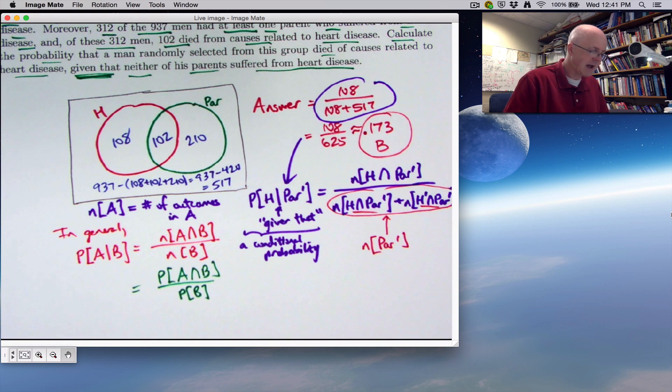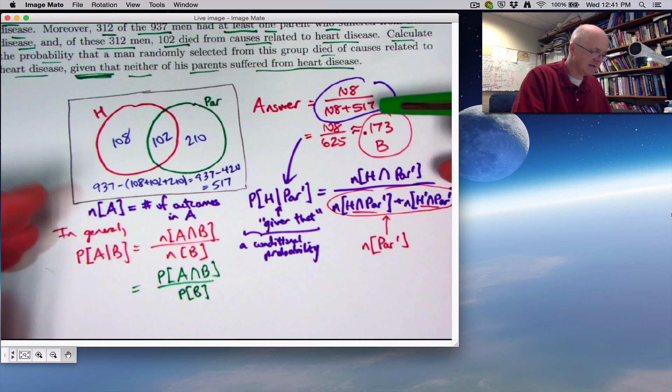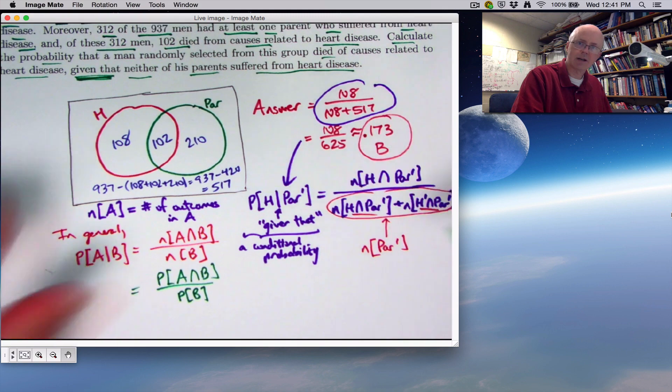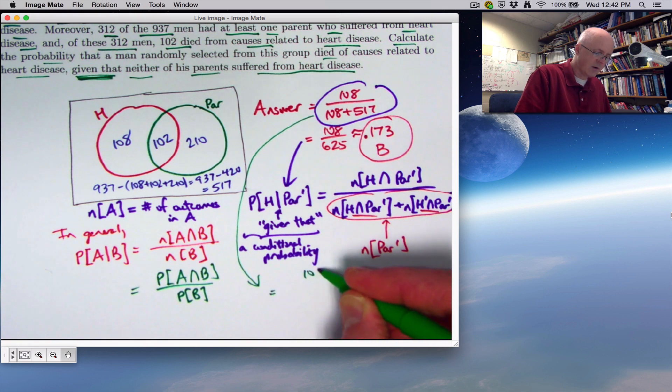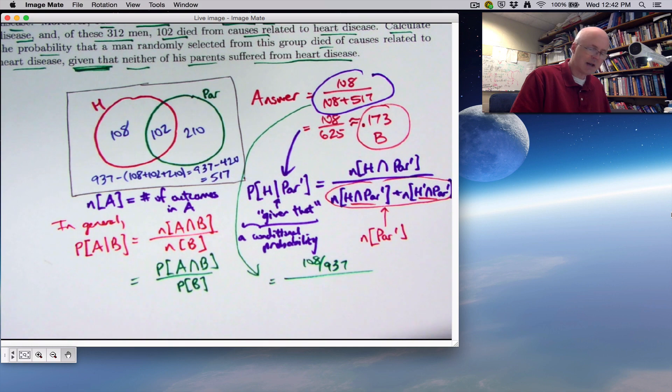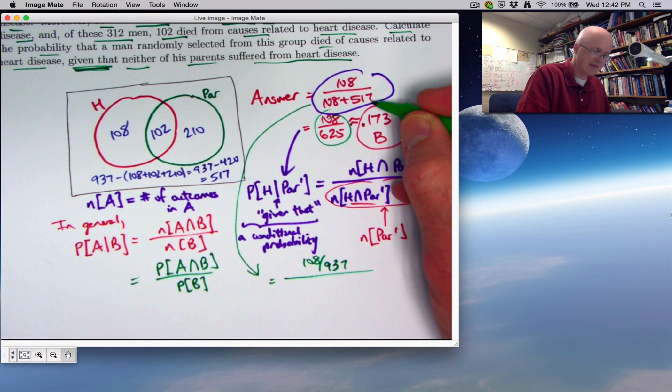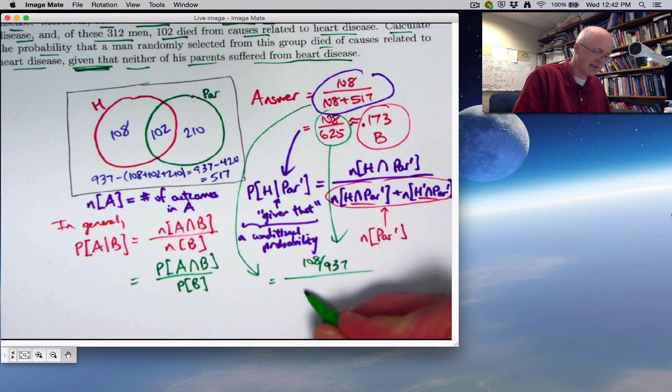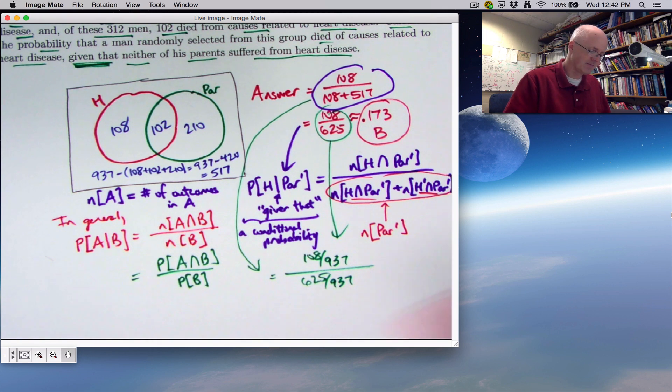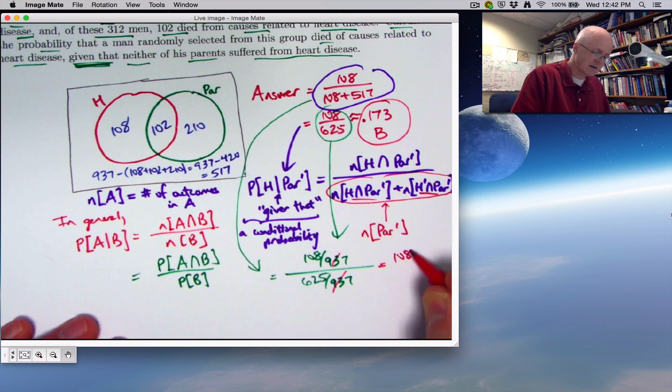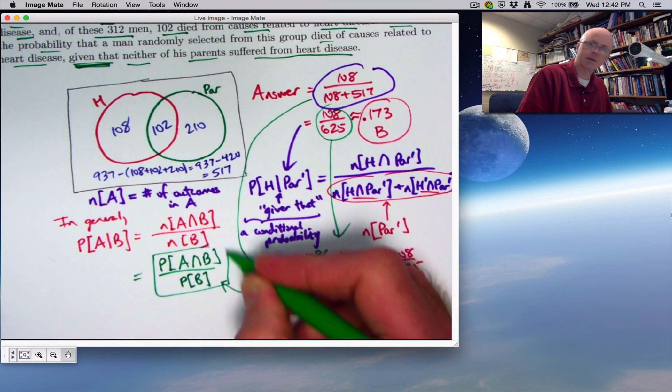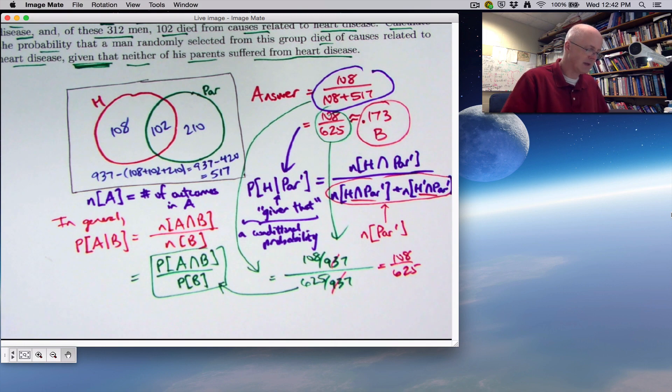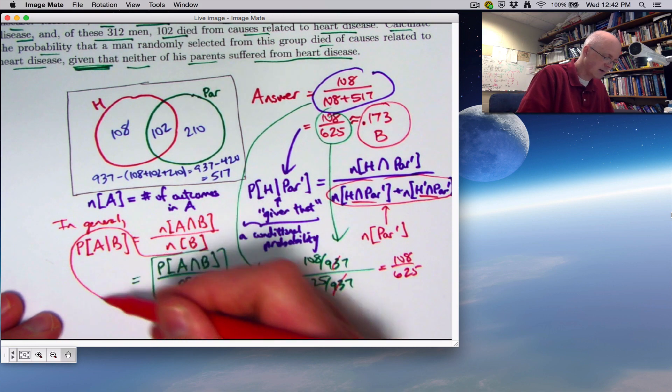Does that work here? Yes, it does. How would it play out here? Well, each of these numbers would effectively be divided by the size of the entire sample space, which is 937. I could think of this as being 108 divided by 937, divided by 108 over 937 plus 517 over 937, which could also be thought of as 625 over 937. And of course, those 937s are going to cancel, leaving you with 108 divided by 625. Same answer as before. But this way of thinking about it makes the connection. So those are the two different perspectives I'm talking about. This connection here is the more general one that works all the time as long as you're not dividing by zero.